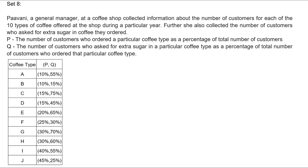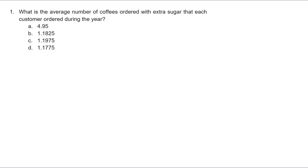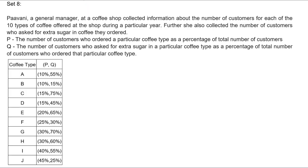Let's look at question number one. The first question is: what is the average number of coffees ordered with extra sugar that each customer ordered during the year? What we will do here is assume that the total number of customers is 1000.